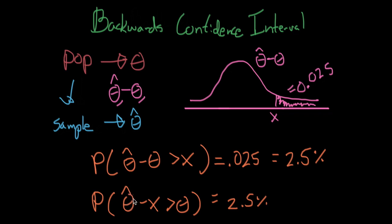So we take the average IQ of the sample, we minus x, and we say that the chance that the true population's IQ is less than theta hat minus x is 2.5%. So we've created a lower bound. That's pretty magical. And it's all because we were using this difference distribution.